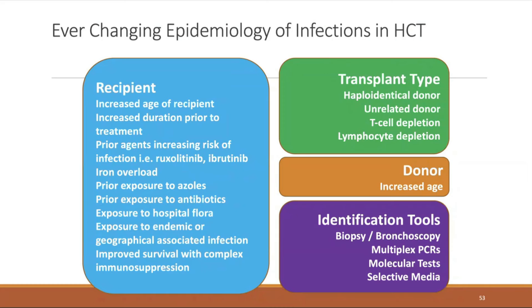Letermovir for CMV prophylaxis was delayed at Moffitt until there was a demonstrated clinical need — when chemotherapy modalities changed and a CMV problem emerged, letermovir was then brought on. For pneumocystis prophylaxis, most regimens are fludarabine-based, buying at minimum six months of PCP risk. Before using dapsone, check G6PD. Before using inhaled pentamidine, ensure the patient does not have asthma or bronchospasm — patients with compromised DLCO are not appropriate candidates.